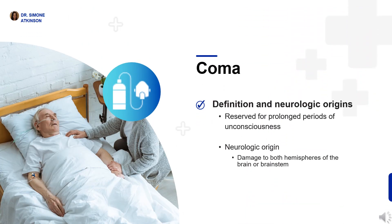When we talk of coma, that is a prolonged state of unconsciousness lasting from hours to months. It results from severe neurological damage to both brain hemispheres or to the brain stem. Coma patients show no response to external stimuli and have impaired cognitive and motor functions, so understanding coma's neurological origins is crucial for appropriate care and interventions.